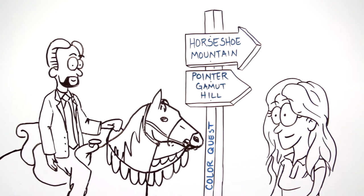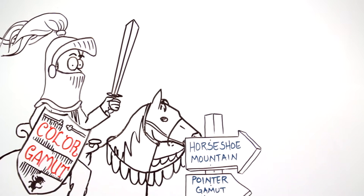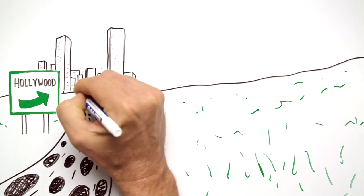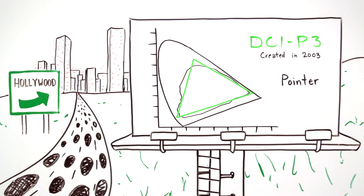Thus, the quest to expand digital color gamuts began. In 2003, the Hollywood studios specified the emerging standard for digital cinema as DCI-P3, wider than HDTV, but not quite as wide as film.